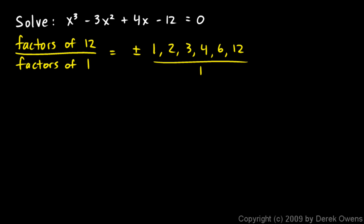And all of those could just be divided by 1, which of course means that this is our list of numbers right here. So let's try these and see if any of these give us a zero for this equation here, or a zero for the polynomial, a solution to the equation.